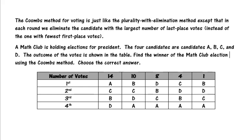The Coombs method for voting is just like the plurality with elimination method except that in each round we eliminate the candidate with the largest number of last place votes instead of the one with fewest first place votes.